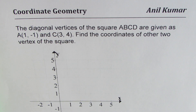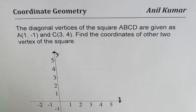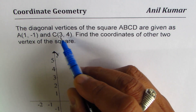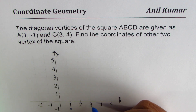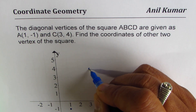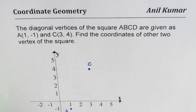I will show you the technique of doing it on a graph paper so that you can understand very easily. Point A is (1, -1), so 1 on the x-axis and -1 on the y-axis. Then we have C as (3, 4), so 3 is the x-value and we go up 4 units. That becomes point A and C for us. Let me label this as A and this point as C.